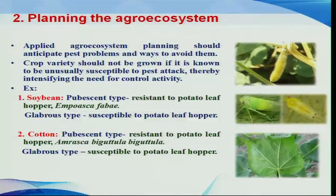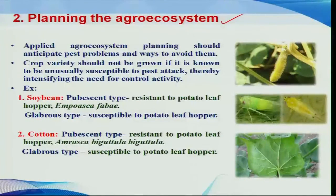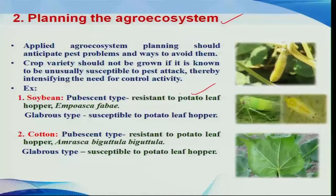The next important concept is planning the agro-ecosystem. Before implementing the integrated pest management system in crop production, we have to plan the agro-ecosystem. Planning lies in the selection of varieties or hybrids. For example, if you select susceptible varieties which harbor higher intensity of pest in certain localities, one should not select such varieties because it intensifies the activity of pest control methods.